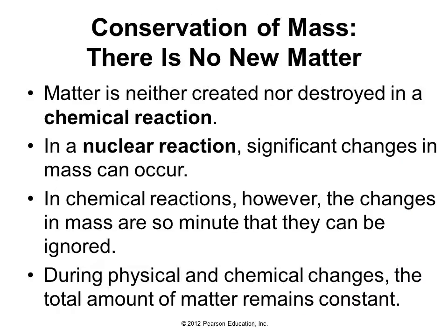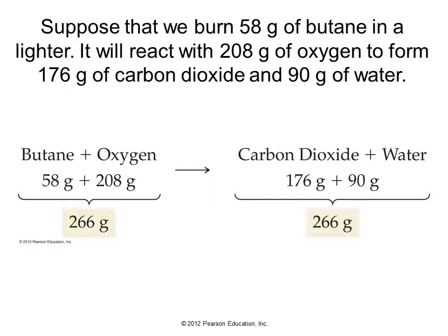Note that in any reaction there is conservation of mass. There is no new matter created in chemical or physical reactions. Using the principle of conservation of mass, we can calculate missing mass — the total mass won't change. If we start with 208 grams of oxygen and 58 grams of butane, they react to form 176 grams of carbon dioxide and 90 grams of water. Adding the reactants gives 266 grams; adding the products also gives 266 grams.